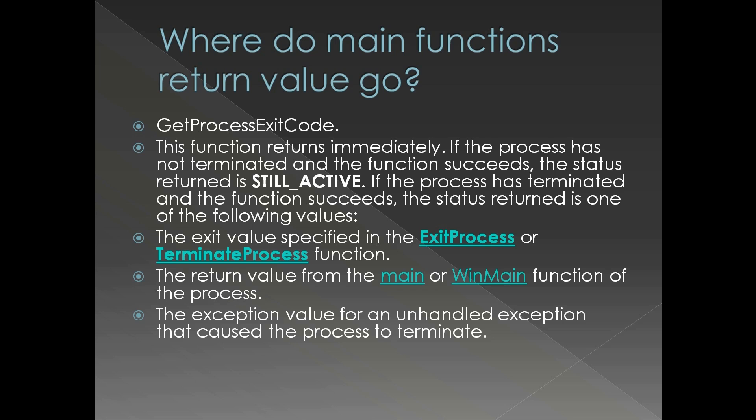The function is GetProcessExitCode. This function returns immediately — it doesn't wait for the process to terminate to get the exit code. If the process has not terminated and the function succeeds, the status returned is STILL_ACTIVE, meaning we will get a STILL_ACTIVE status code.